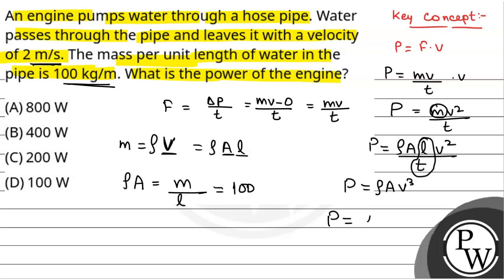So, power is equal to 100 into v cubed and v cubed is 8. So, this will be 100 into 8. That is equal to 800 Watt.